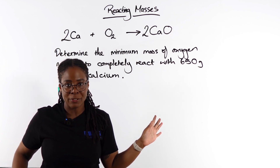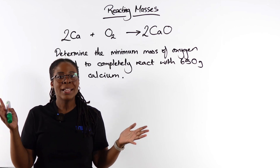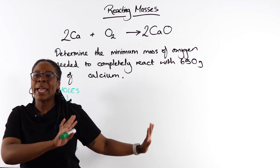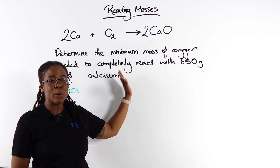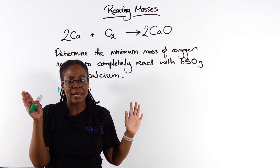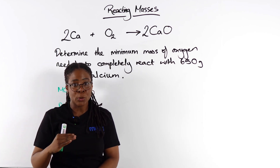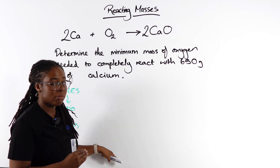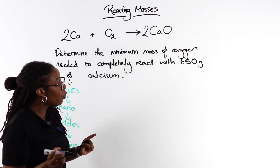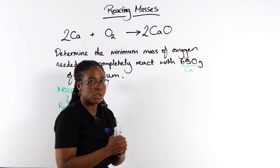At GCSE you might be used to setting this out in a table. If you want to keep using a table, I can't stop you — but at A-level I would move away from that approach. As you progress, there will be more steps that take you outside the table, making it messy and harder to track. My preferred approach is to set it out linearly down your page, and when you run out of space, move to the other half of the page.